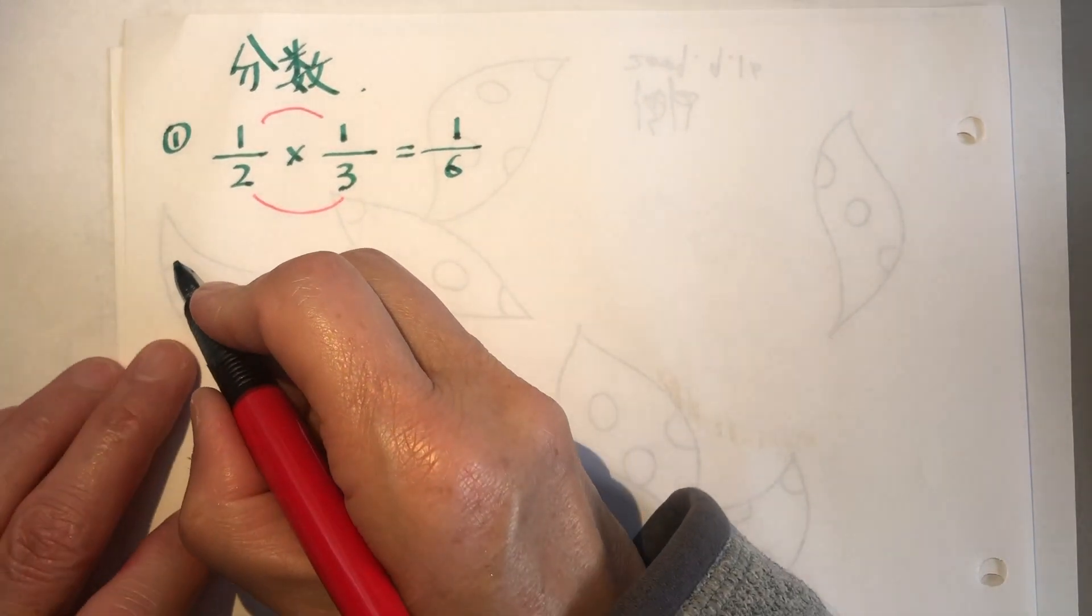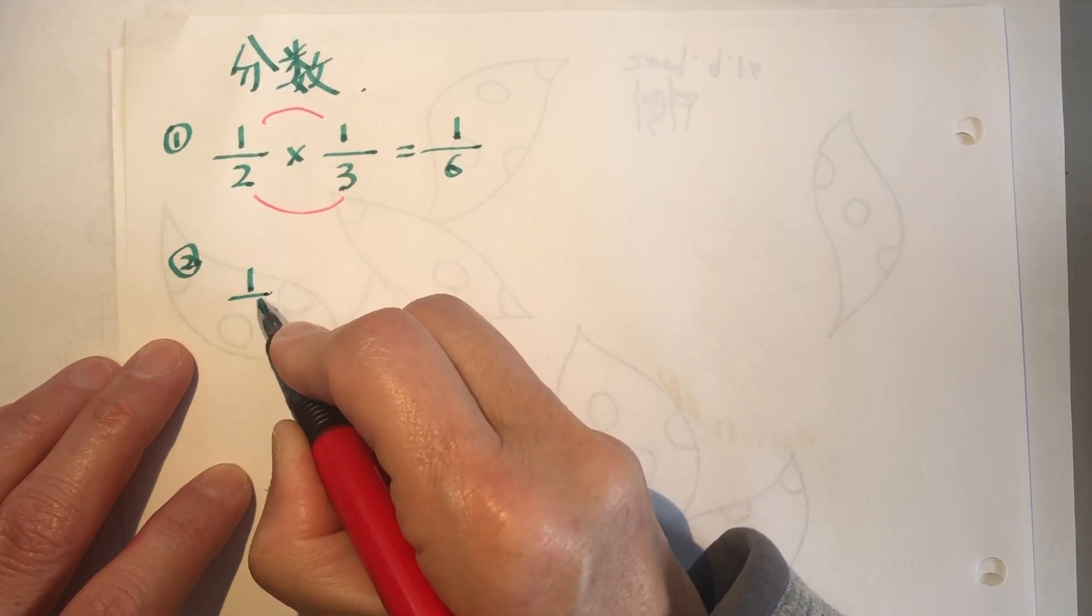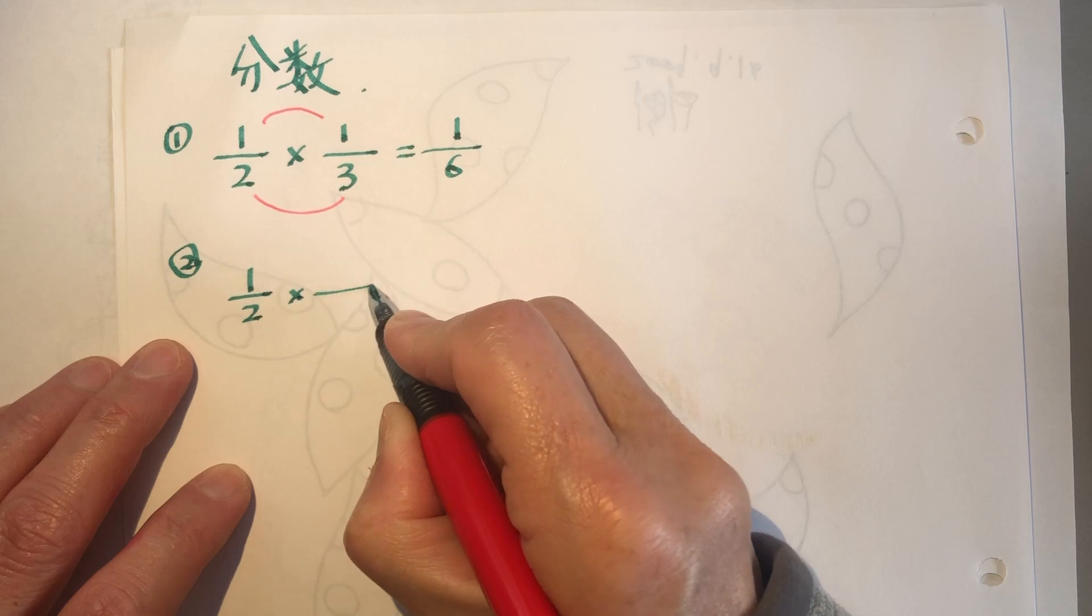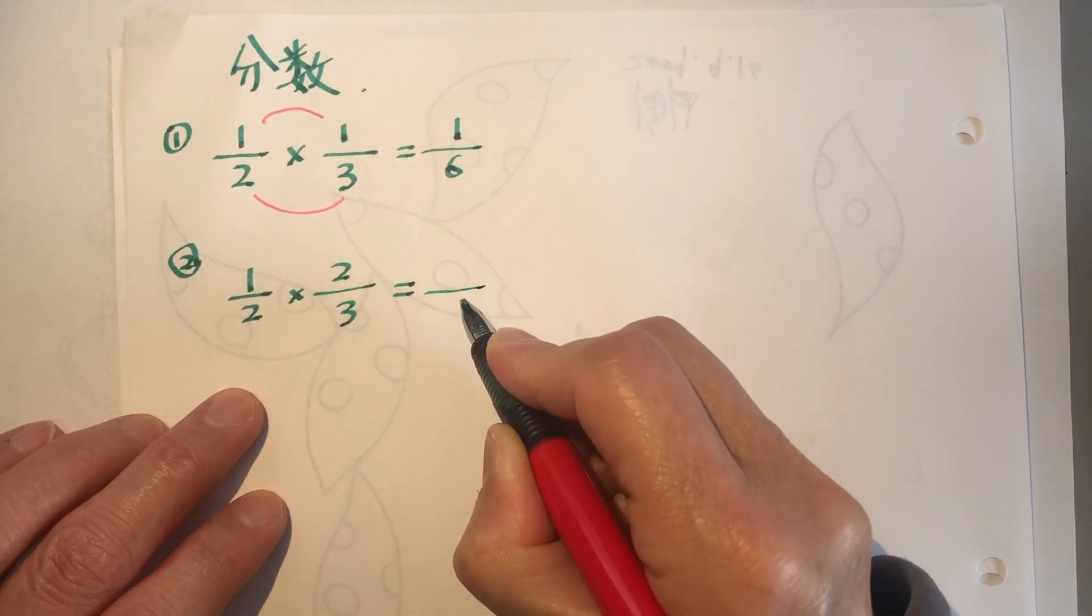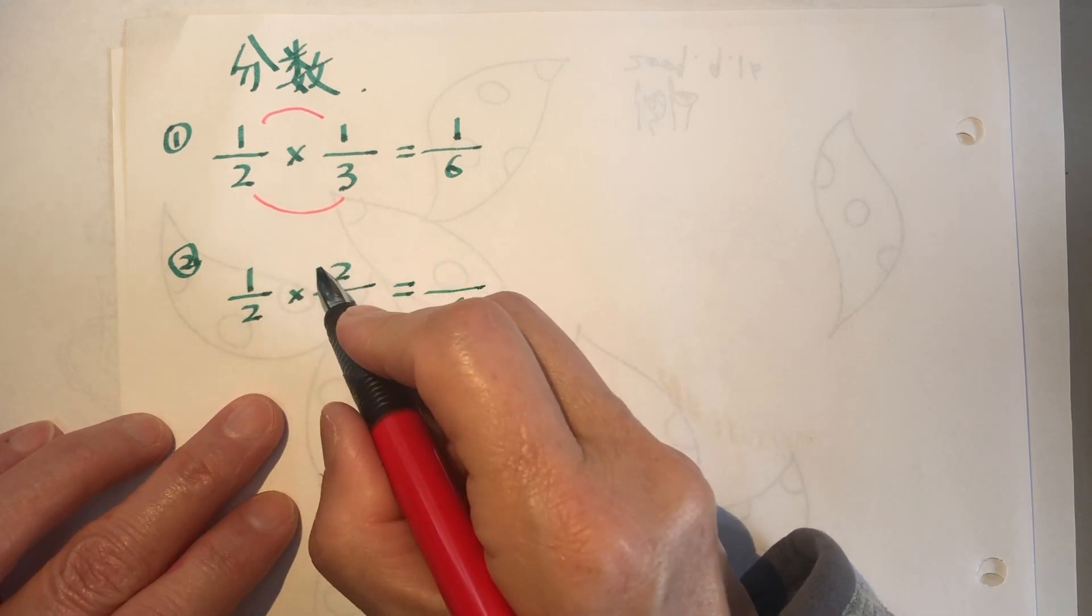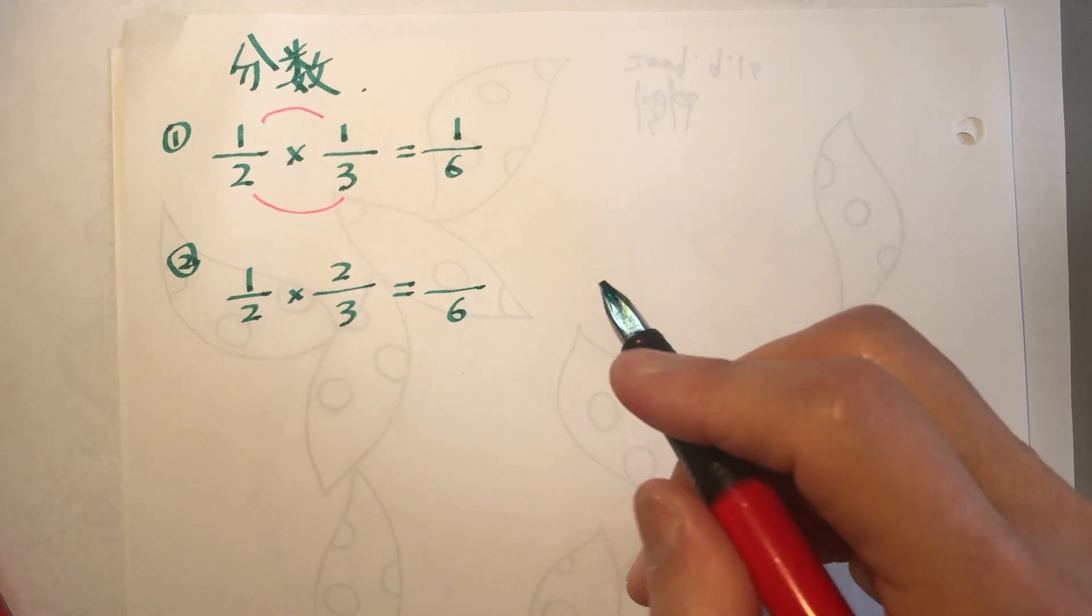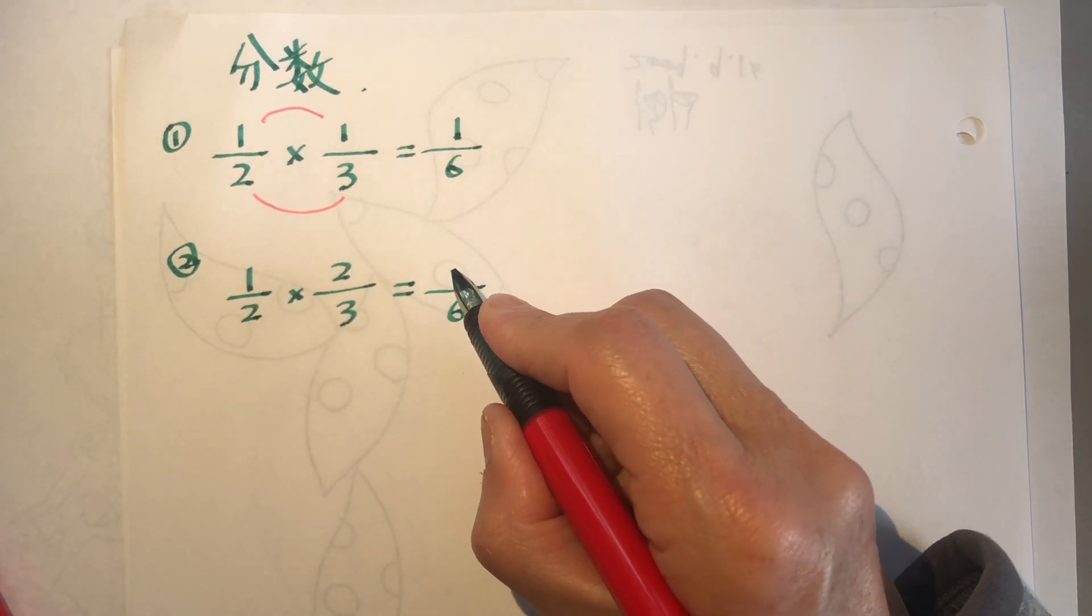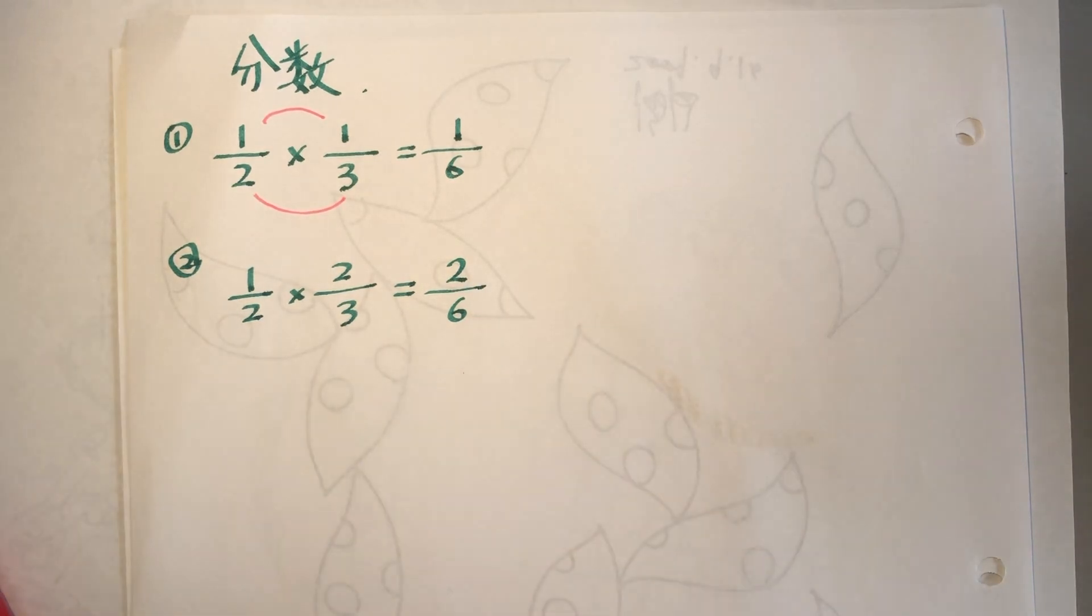The second one is 1 over 2 times 2 over 3. The bottom with bottom is 6, and the top with top is 2 over 6.